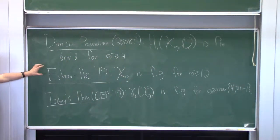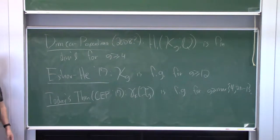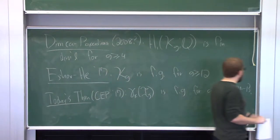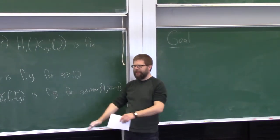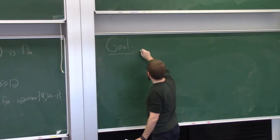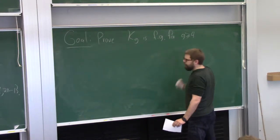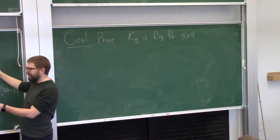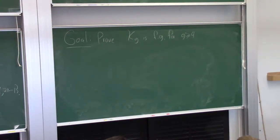Ershov-He used the theory of BNS invariants, which is the same tool I'm going to use. Our proof keeps getting easier and easier — we were worried it would eventually become false if we kept simplifying it, but thankfully the process stopped. My goal today is to give a complete proof that K_g is finitely generated for g at least 4. The full proof dealing with terms deep in the lower central series is really, really hard and messy, but for K_g the proof is cleaner. We use BNS invariants, but in somewhat different ways than Ershov-He.